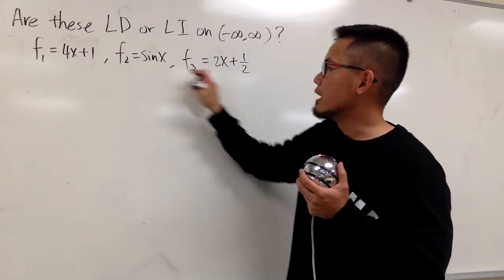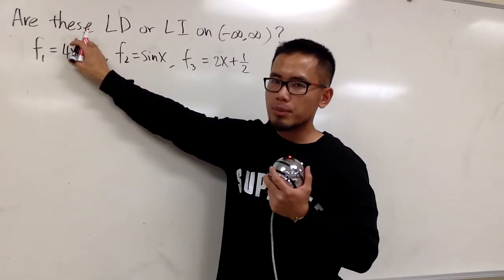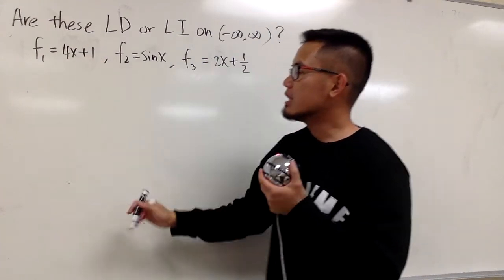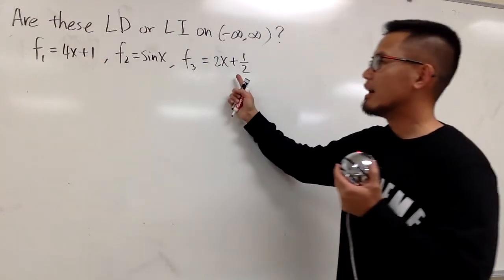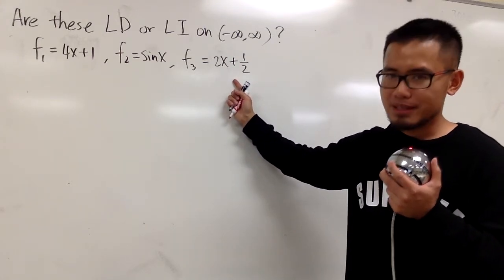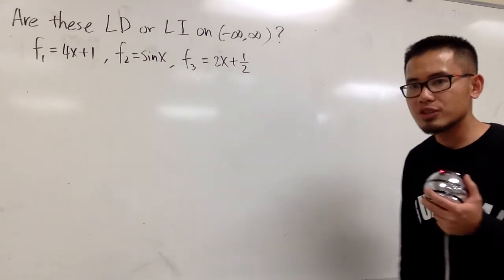And then if you compare f2 and f3, similar situation. They are not constant multiples of each other, so they are linearly independent as well. But if you look at f1 and f3, in fact, they are linearly dependent because these two are constant multiples of each other.